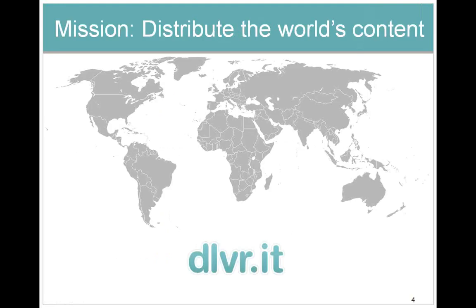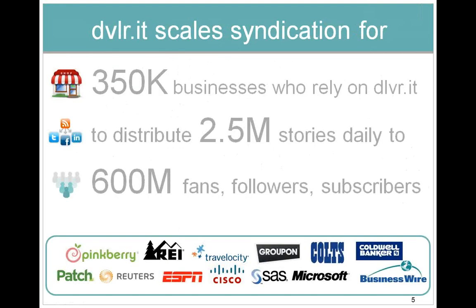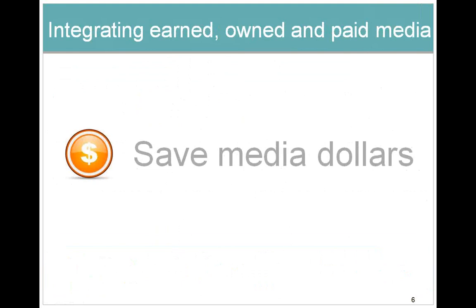Our mission at Deliver.it is pretty simple — it's the idea of distributing the world's content. We distribute about 2.5 million pieces of content every day for 350,000 businesses. That goes out to about 600 million fans, followers, and subscribers. We see a lot of content running through our system, and we help companies do a lot of different things with their content strategy, so we have a really good idea of what works. This plan is pretty simple and any business can take advantage of it, no matter what size or budget.